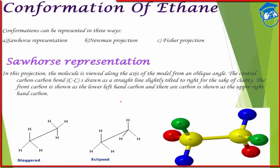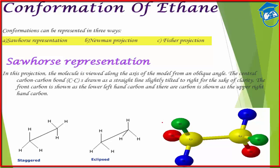First of all, how are we going to represent conformers on paper? There are generally three ways to represent this 3D structure in 2D — because 3D representation is very difficult to visualize. We can represent conformers via either the sawhorse formula, the Newman projection, or the Fischer projection. These are essentially 2D representations of the 3D structure.